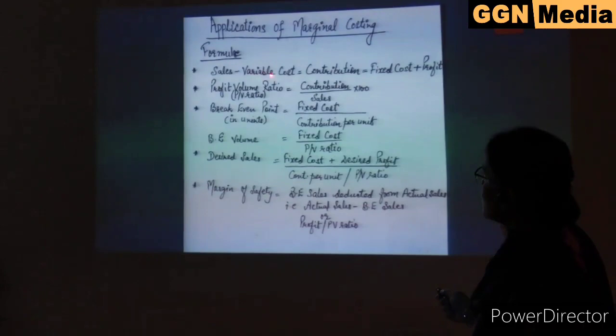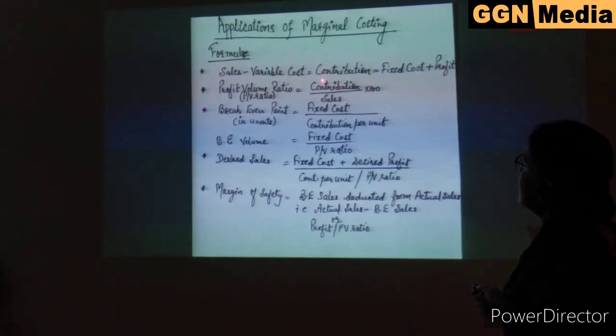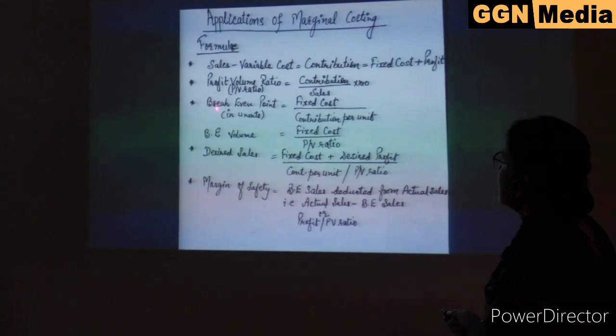This is also known as the marginal cost equation. Profit volume ratio, or PV ratio, is contribution upon sales multiplied by 100. We can infer from this that if contribution to sales is 30%, then variable cost to sales would be 70%.